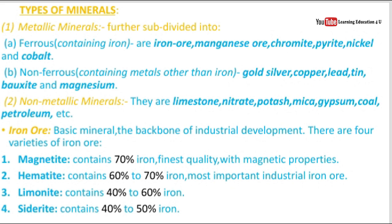Now, iron ore is a basic mineral and the backbone of industrial development. There are four qualities of iron ore. The first is magnetite, which has 70% iron and is the finest quality with magnetic properties. The second is hematite, which has 60-70% iron and is also a very important industrial iron ore. The third is limonite, which has 40-60% iron. The fourth is siderite, which has 40-50% iron.